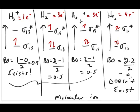The confirmation of this comes from experiment — it turns out that all three ions have been shown to exist experimentally, whereas He2 has not been shown to exist. That's really the confirmation of the correctness of the molecular orbital model in predicting properties of molecules.